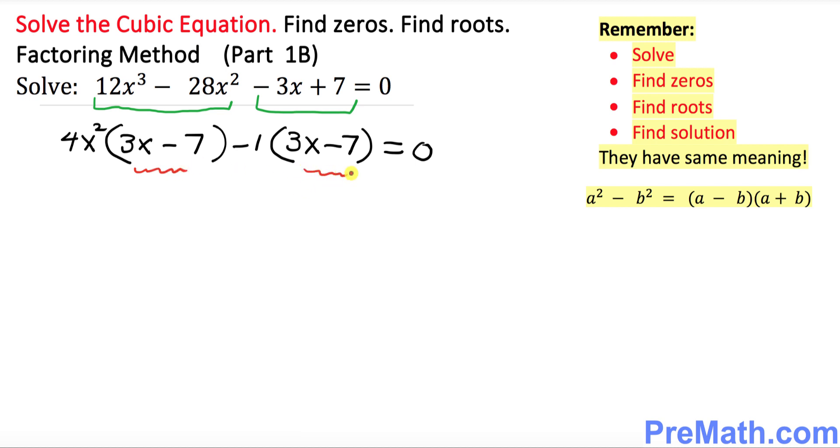This parentheses and these parentheses, they are same, isn't it? I want you to bring it outside. Just put it over here. 3x minus 7 outside. And I want you to put down this 4x squared minus 1 inside this parentheses. 4x squared minus 1 equal to 0.